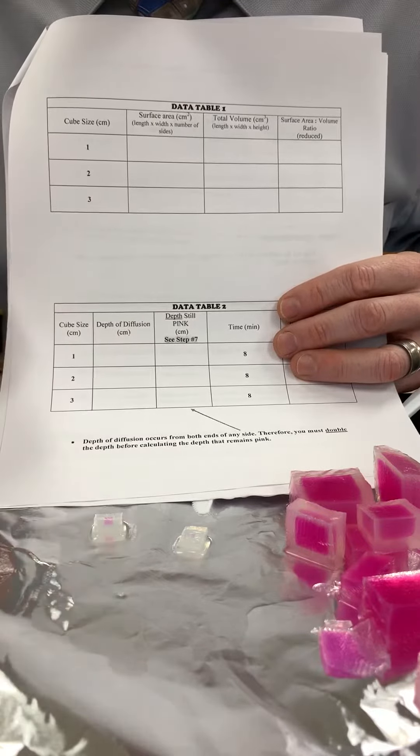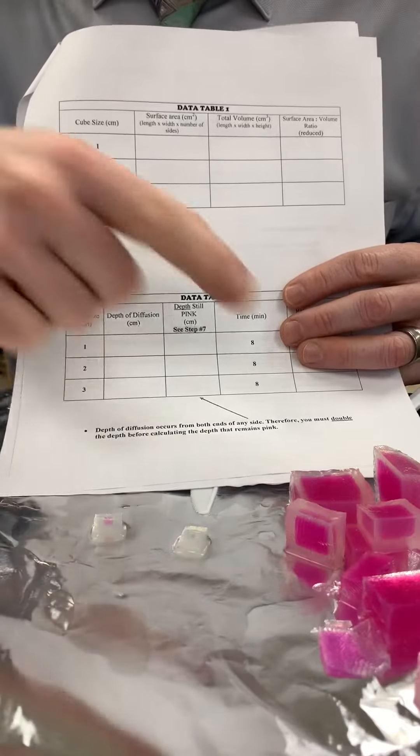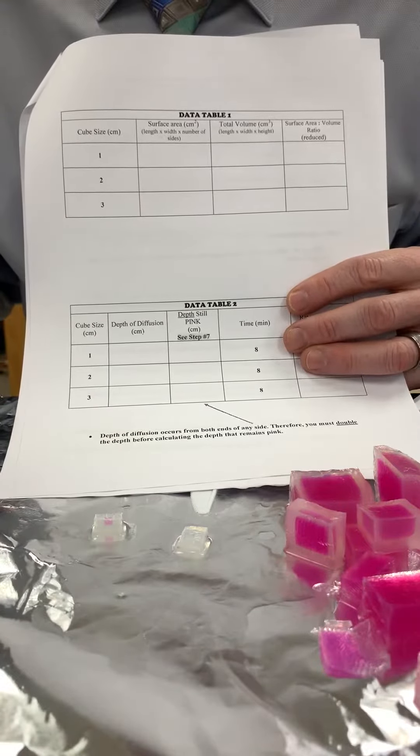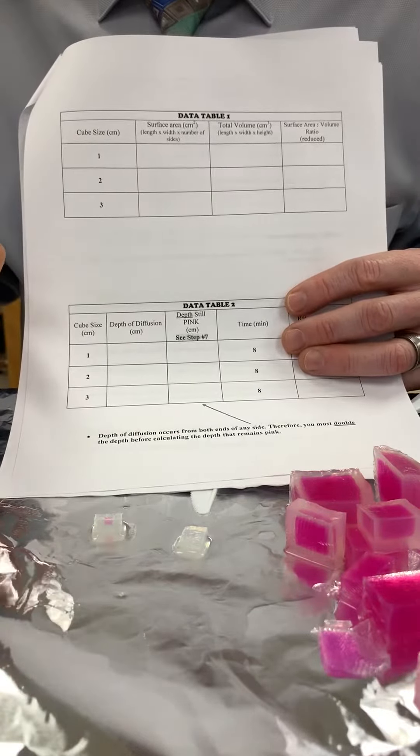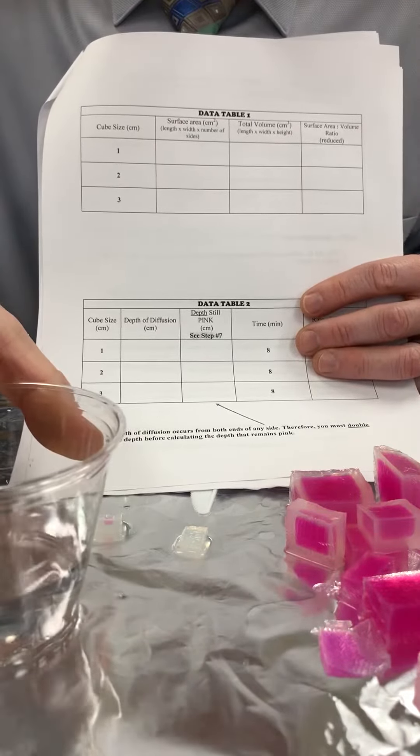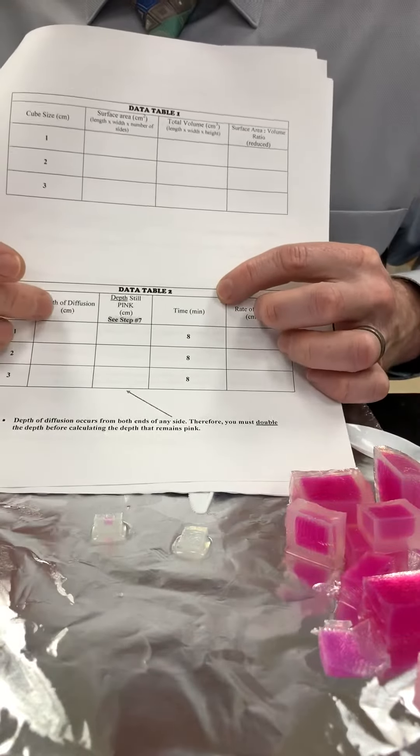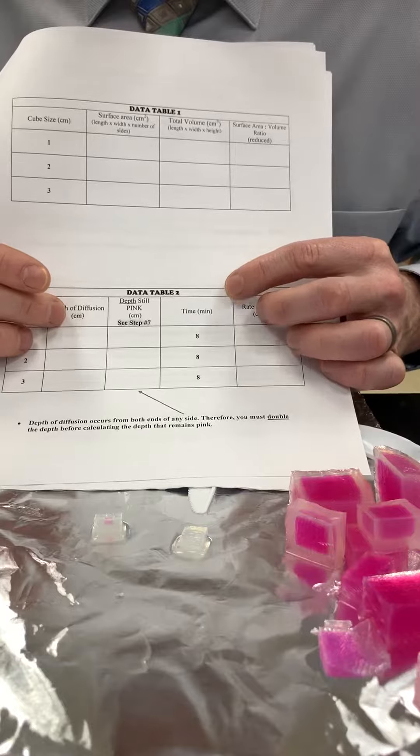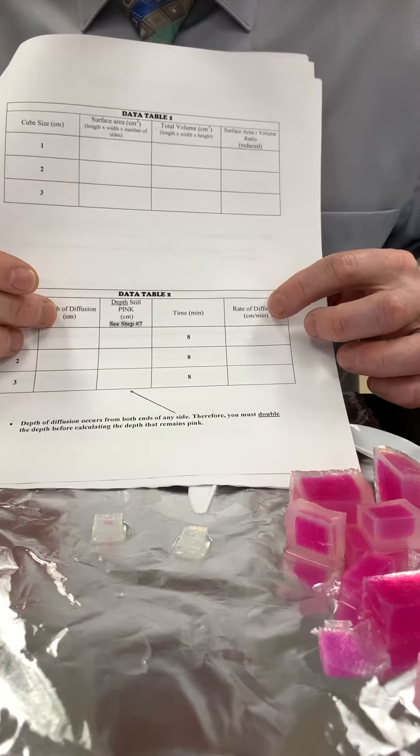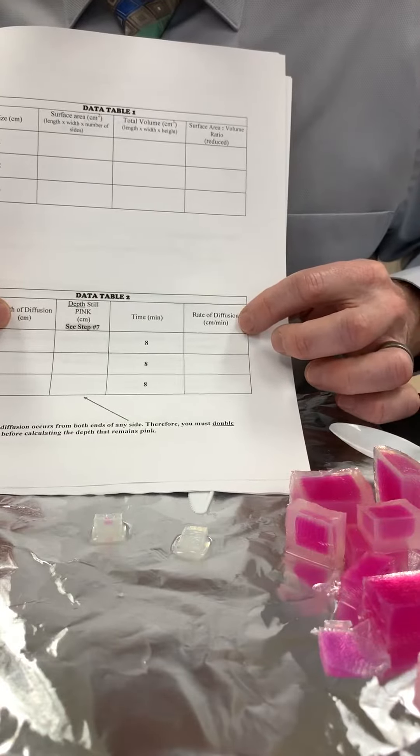So the depth of diffusion was the same in all three cubes. If they were all placed in the solution for eight minutes, then that means if I have a distance of 0.35 over a time of eight minutes, the rate of diffusion is the same, and that should be a constant.